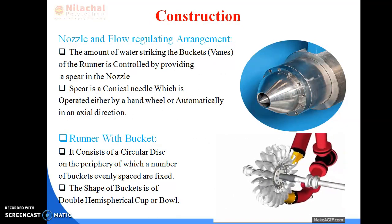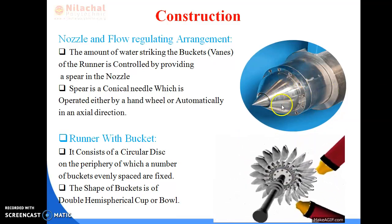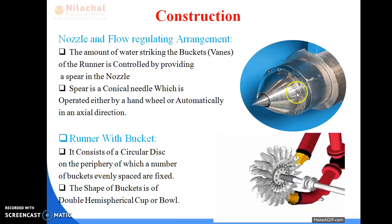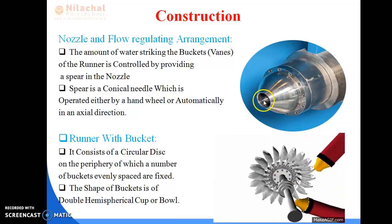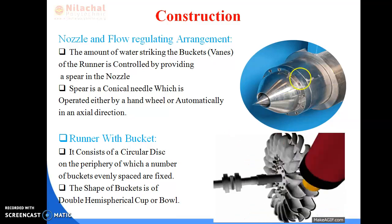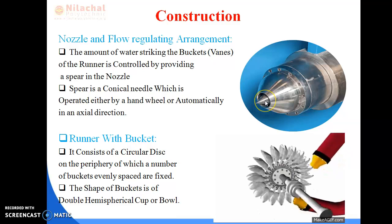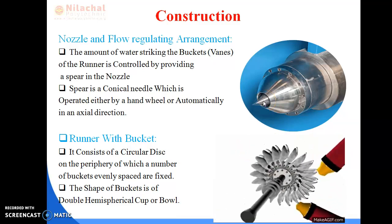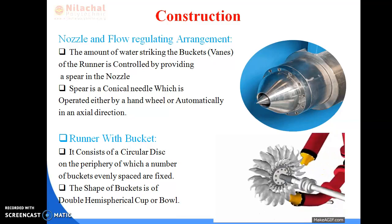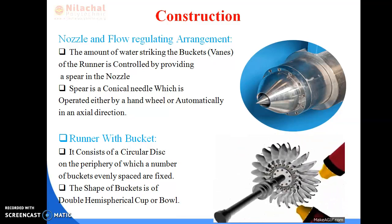First, we need to understand the use of the nozzle and flow regulating arrangement. As shown in the figure, we have a pipe — the penstock — whose end is attached to the nozzle. Inside the nozzle, there is a conical part, a conical needle, which moves inside the passage of the nozzle. The movement of the spear inside the nozzle controls the mass of liquid flowing through the nozzle according to the requirement at the turbine unit.